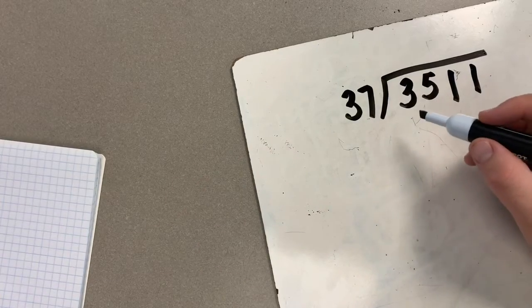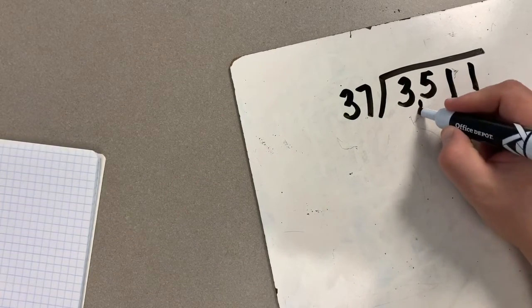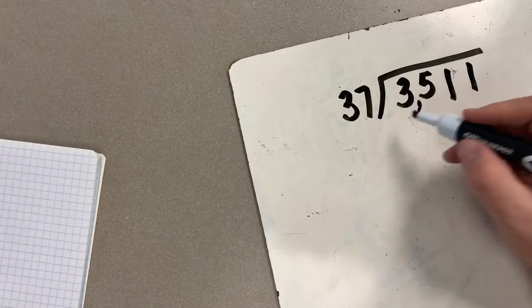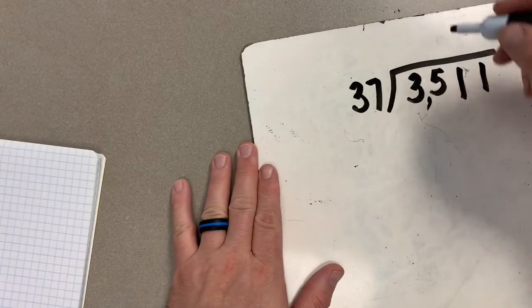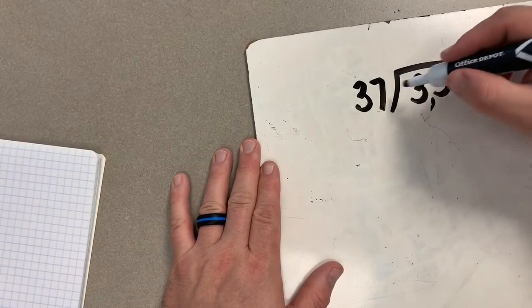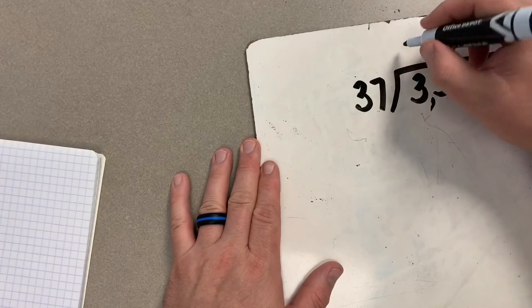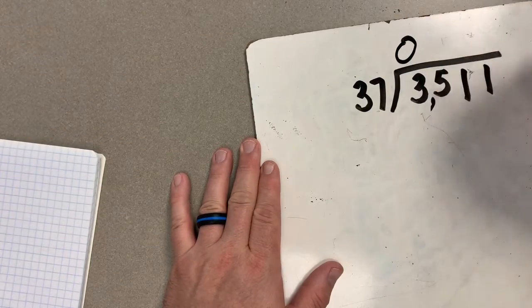Right, last but not least, we have 3,511 divided by 37. Again, let's check. Of course, 37 can't go into a single digit, so there's going to be a zero here to hold the place.